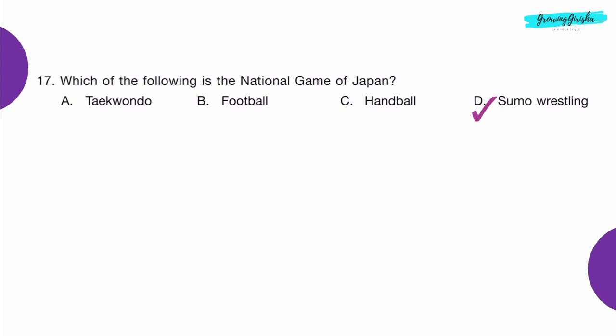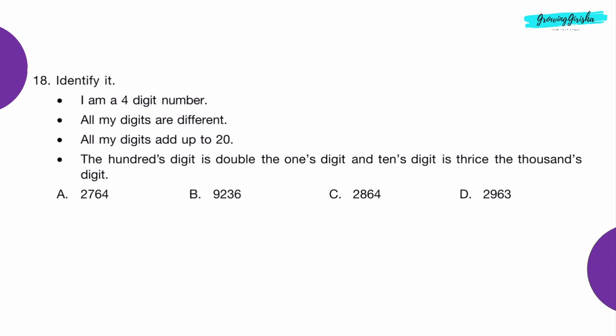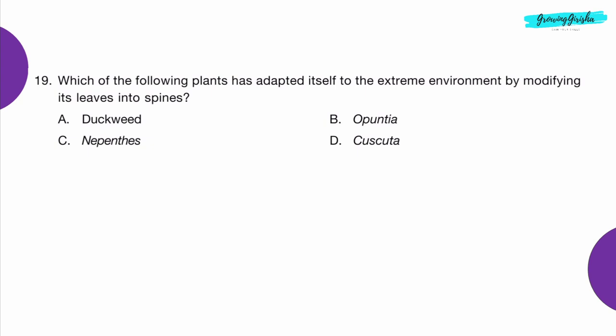Question 18: Identify it. I am a 4-digit number. All my digits are different. All my digits add up to 20. The 100th digit is double the 1's digit. And the 10's digit is thrice the 1000's digit. Option C: 2,864.